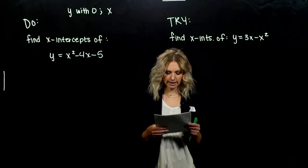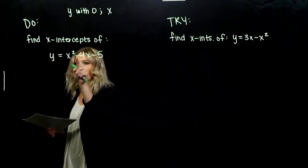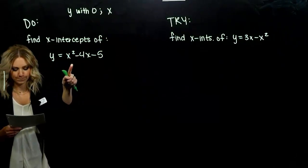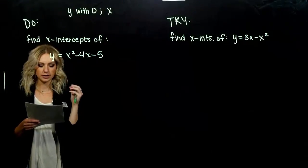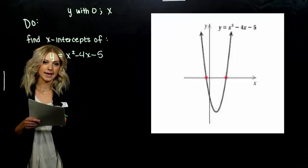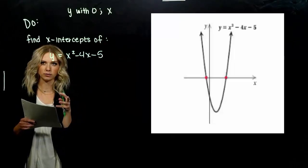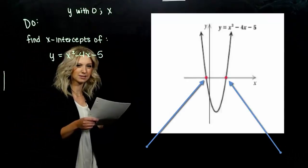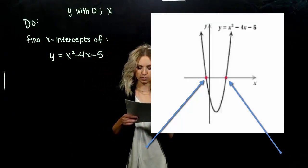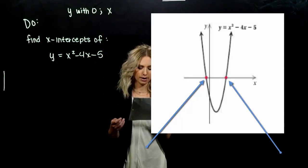We want to find the x-intercepts of this graph of this quadratic, and we have a picture of it below. So we can just look on the x-axis, if there are labels, and see where those points are happening at. But in this case, do we have any labels? Do I know what points those are occurring at?